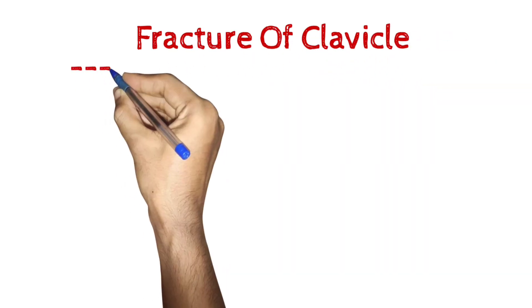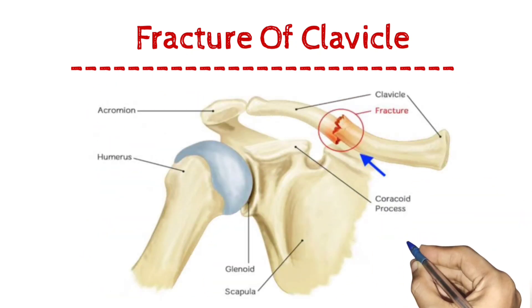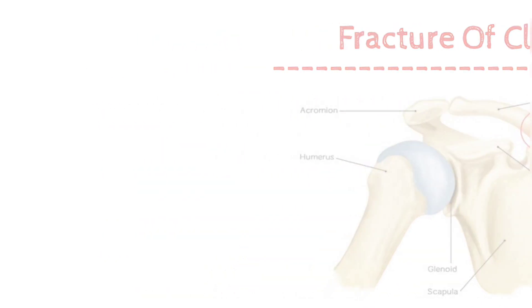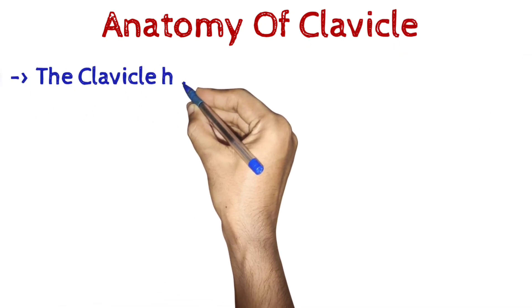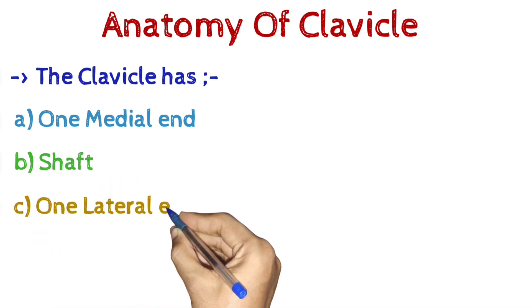Fracture of clavicle. Anatomy of clavicle: The clavicle has one medial end, shaft, and one lateral end.